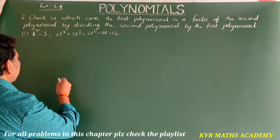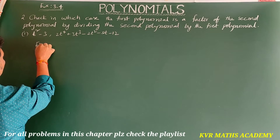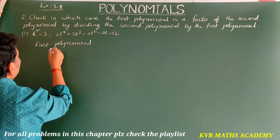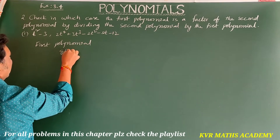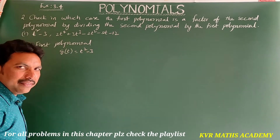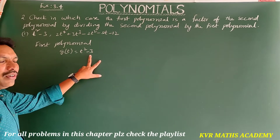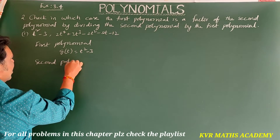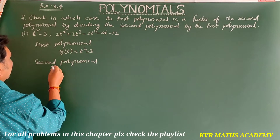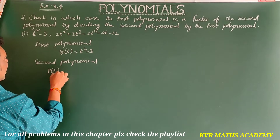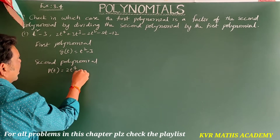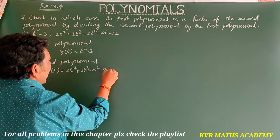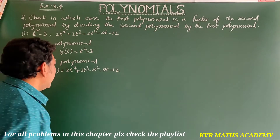The first polynomial: g(t) = t² - 3. The second polynomial: p(t) = 2t⁴ + 3t³ - 2t² - 9t - 12.